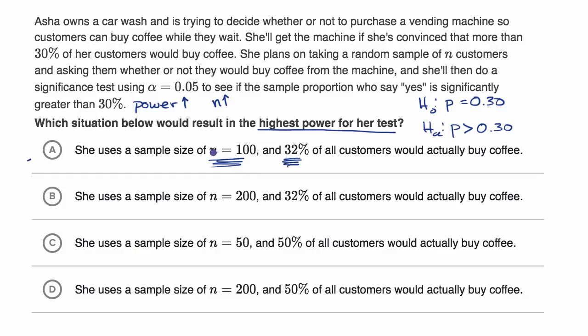And so we want the highest possible n, and that looks like an n of 200, which is there and there. And we want a true proportion of customers that would actually buy coffee as far away as possible from our null hypothesis. Which once again, would not be under Asha's control. But you can clearly see that 50% is further from 30 than 32 is.